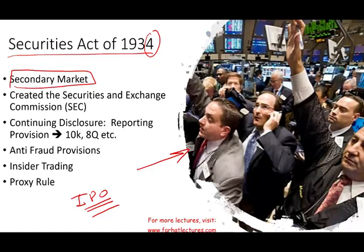The reason we learn about the 1933 and 1934 Acts is to determine CPA liability under those two acts. So it's very important to understand what 1933 is about and what 1934 is about. Once we move into the next session, when we talk about the CPA, auditor's, or tax preparer's liability, it will be easier to understand how all this fits together.